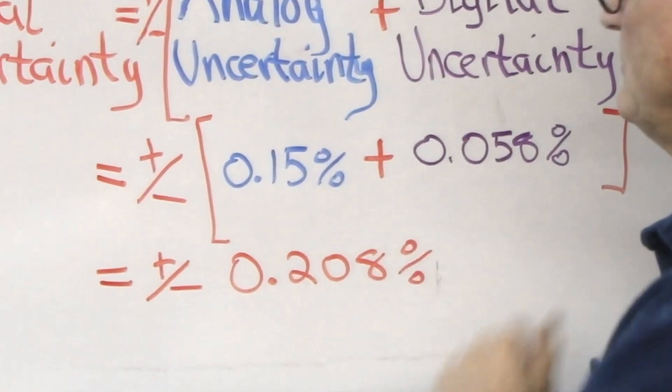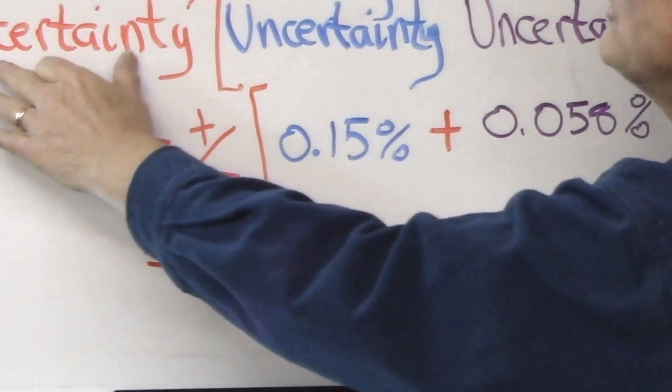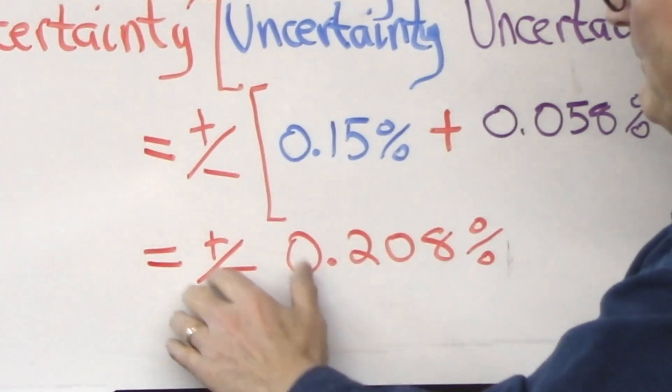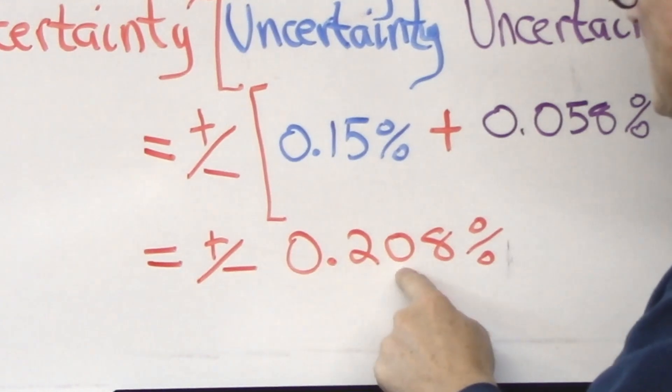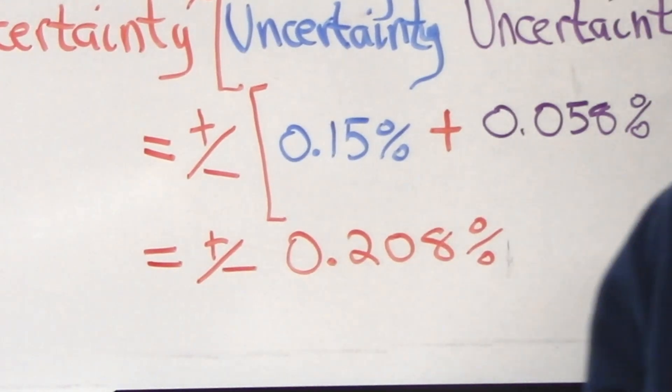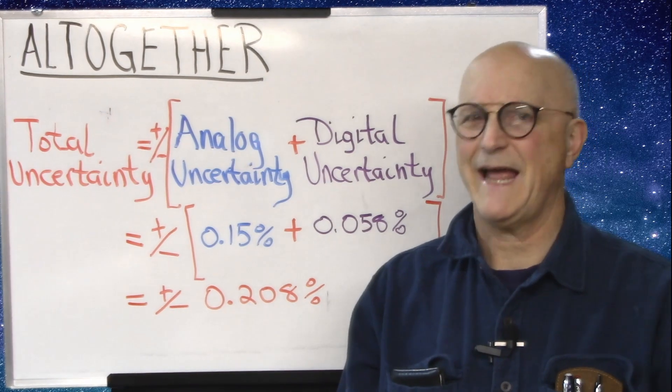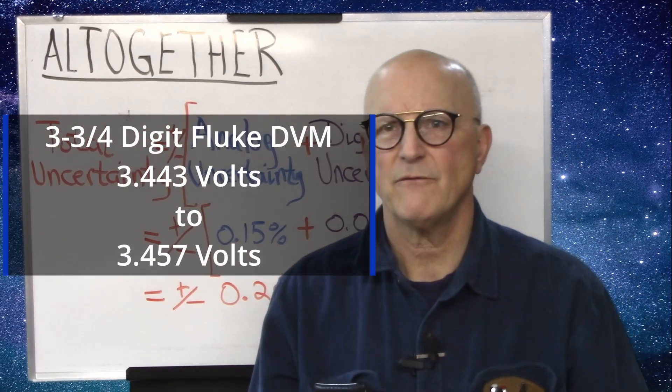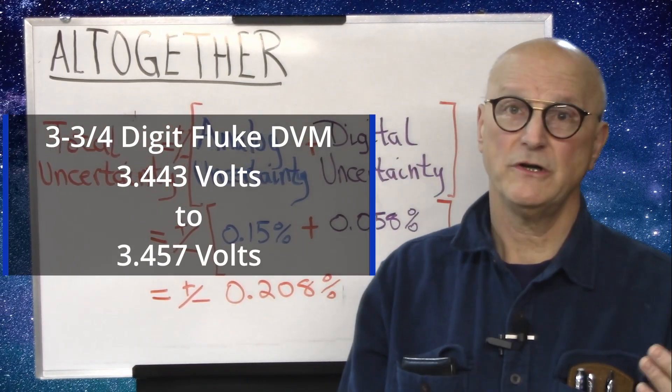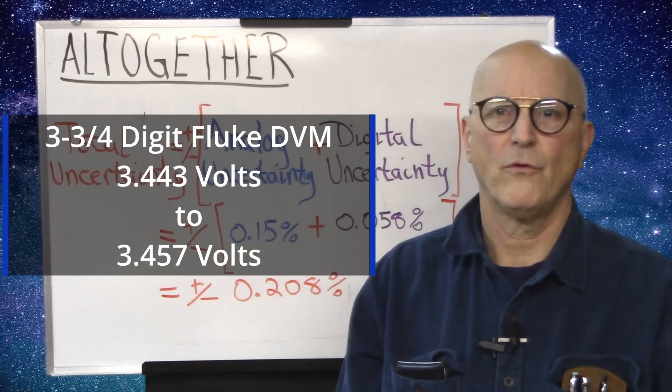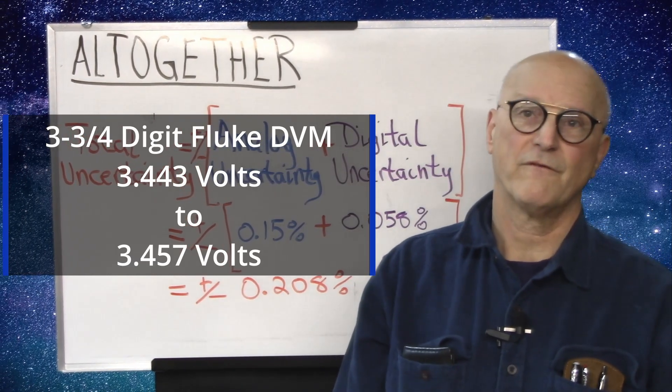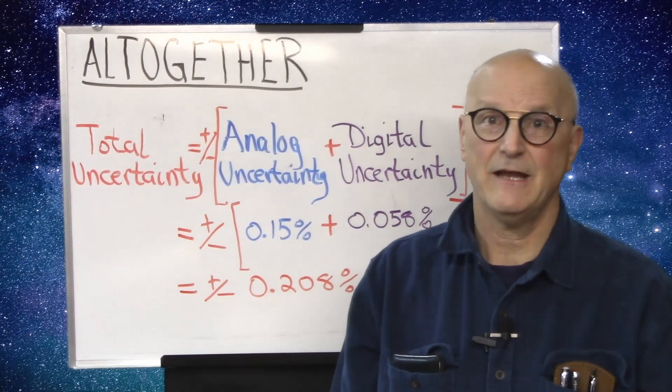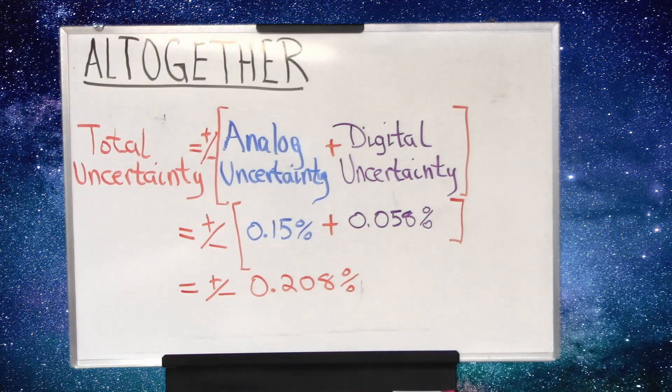So we add these two together to discover that our total uncertainty for this measurement is going to be plus or minus 0.208%. So if the real value were exactly 3.45 volts, my 3.5-digit Fluke 175 could indicate anything from 3.443 volts to 3.457 volts and anything in between.